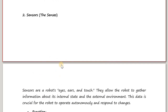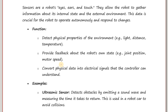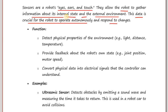Next, we have sensors. Just like us humans, robots also have sensors like eyes, ears, and touch. These allow the robot to gather information about both its internal state as well as the external environment. This data is crucial for the robot to operate autonomously and respond to changes. The functions of sensors are: to detect physical properties of the environment like light, distance, temperature, and pressure; to provide feedback about the robot's own state such as joint position and motor speed; and to convert physical data into electrical signals that the controller can understand.